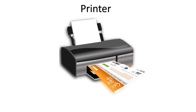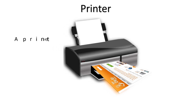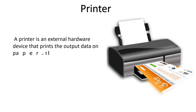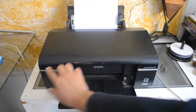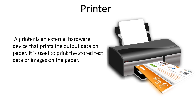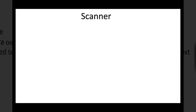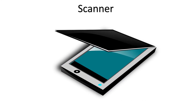The printer is another important hardware that gives us output on paper. It is an external hardware device that prints output data on paper and is used to print stored data or images from the computer system. It is a hard copy output device and an important hardware part of the computer system.